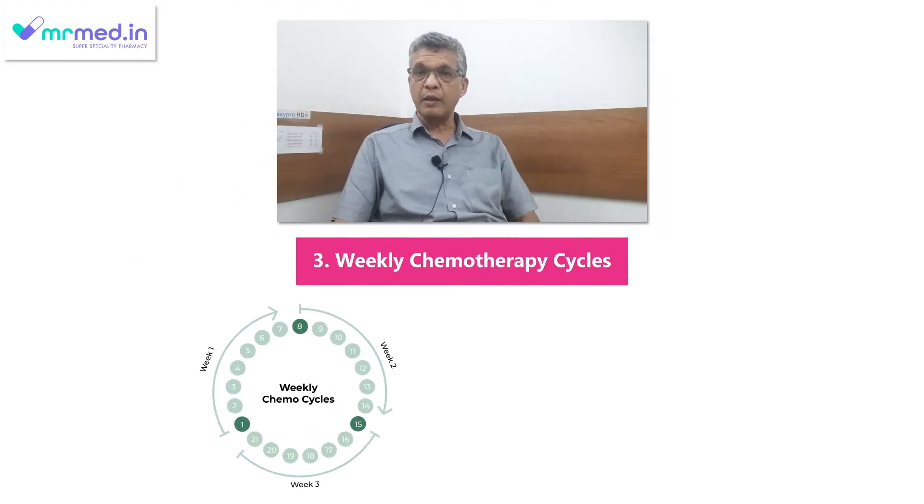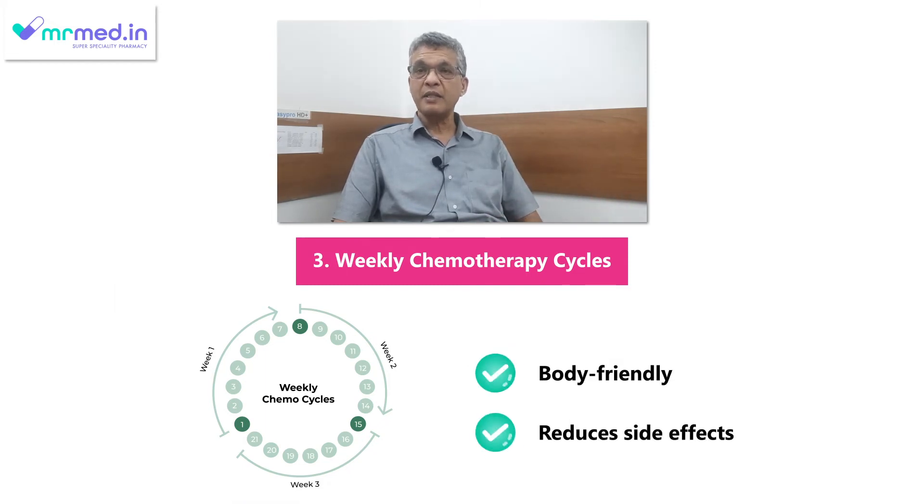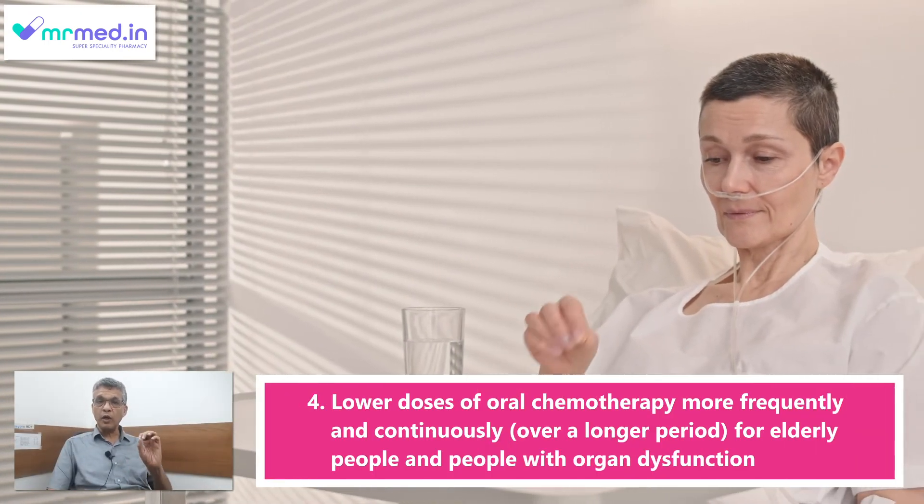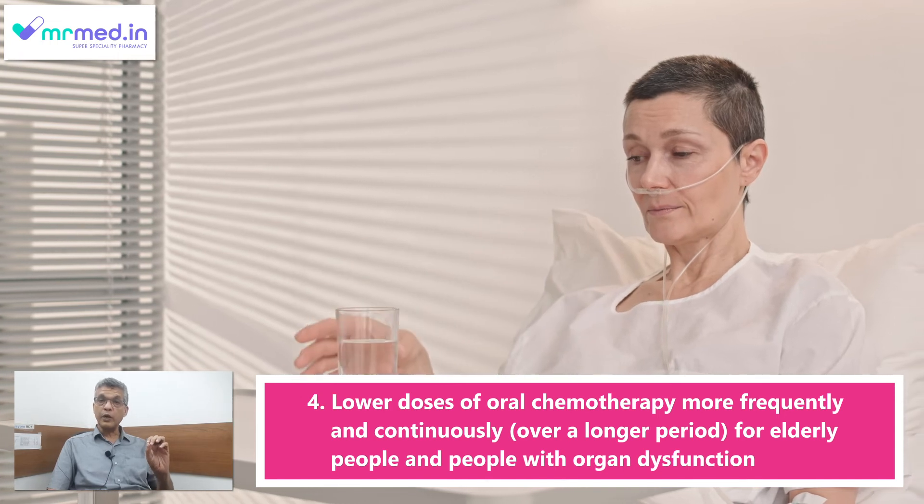The third very important method which we follow at Sampradha Cancer is to give weekly chemotherapy instead of three-weekly chemotherapy. This is much more body-friendly and reduces the side effects. We also use growth factors to counter the side effects of chemotherapy. In very old patients, we also give low doses of oral chemotherapy every day. This is called metronomic chemotherapy, which is very suitable for elderly people, those whose performance status is not good, or those who have a lot of organ dysfunction.